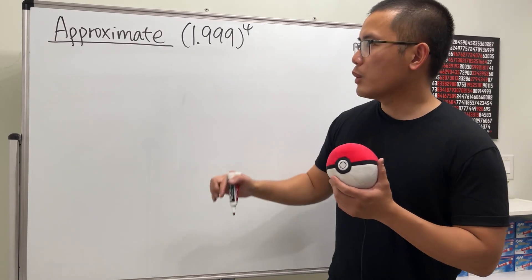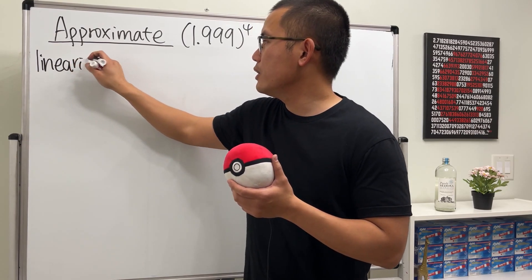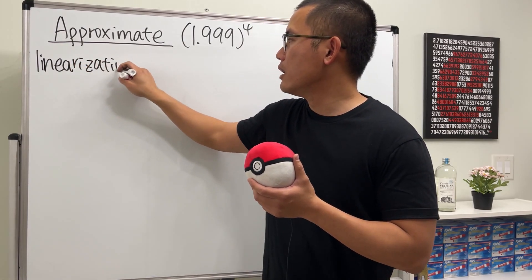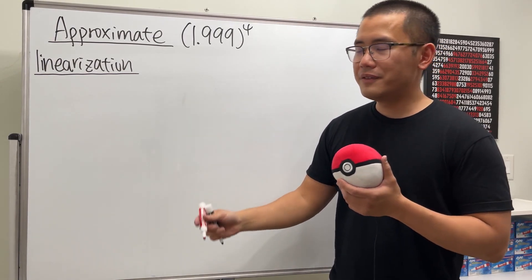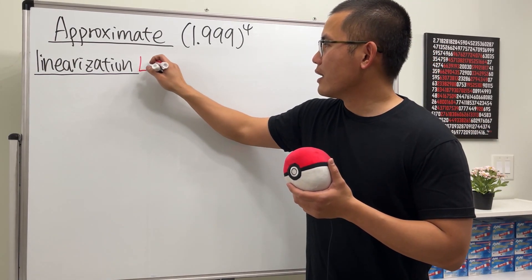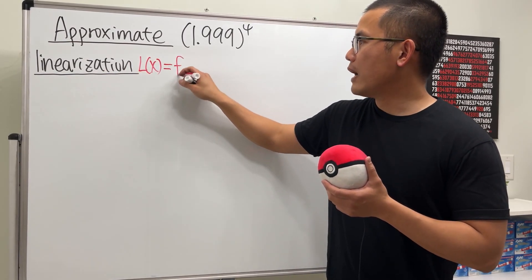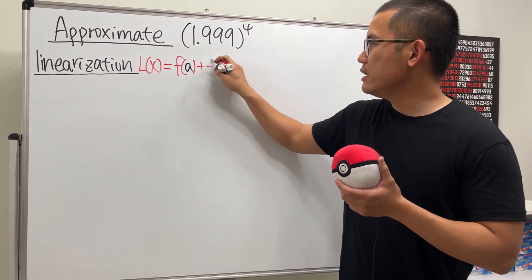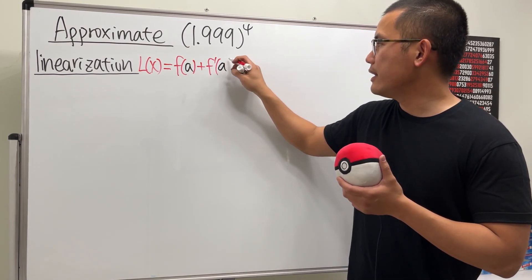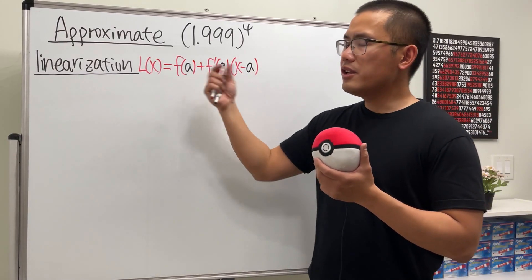Let's start with the first way, which is linearization, meaning we use the equation of a tangent line. If you want to see more examples, you can check out my other videos. I'll write down L(x) for the linearization equals the value of the function at the a value, then we add the derivative there, and then we multiply by x minus a. So we linearize the function first.